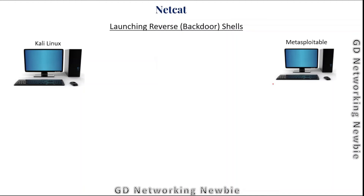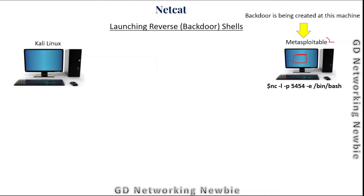The last function we are going to discuss is launching a reverse shell or backdoor. We'll be creating a backdoor on the Metasploitable 2 machine, which we consider the victim machine. This backdoor means we want to control this machine from the Kali Linux machine and issue commands — the Metasploitable machine will be under the control of the Kali Linux machine.